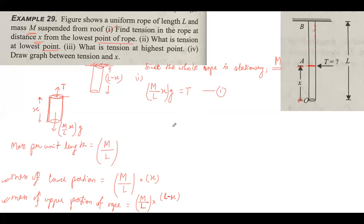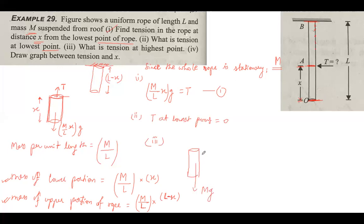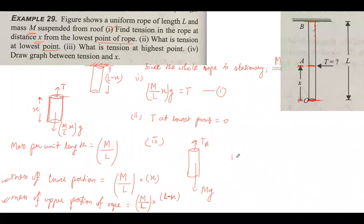For the second part: tension at the lowest point — since there is no weight hanging below the lowest point, tension at the lowest point equals zero. For the third part: tension at the highest point — the entire rope of mass M hangs below, so tension at the highest point equals Mg.